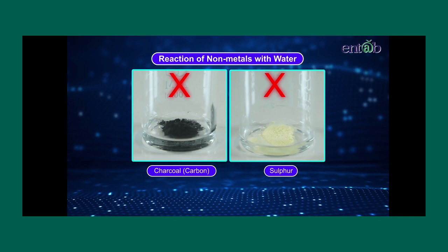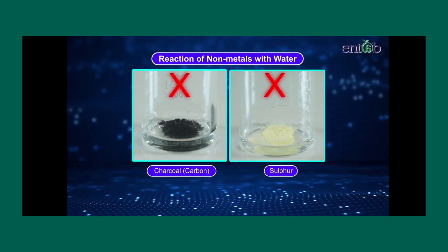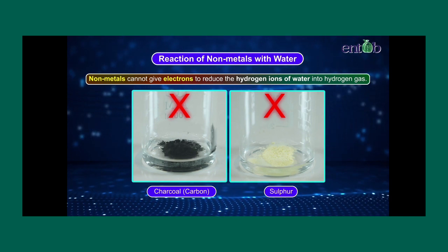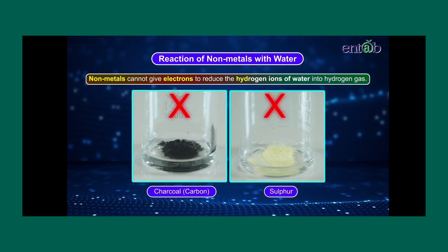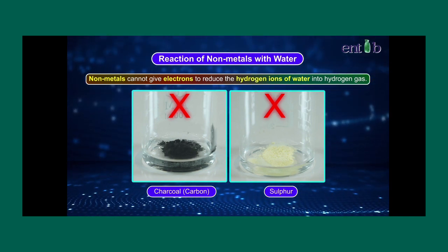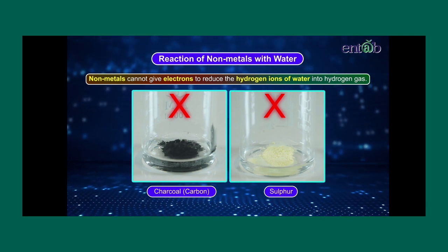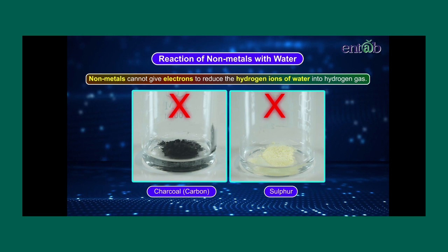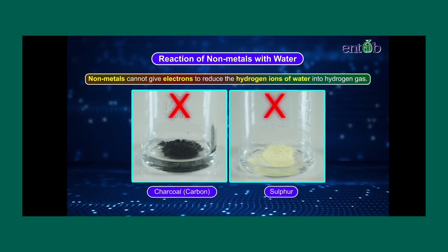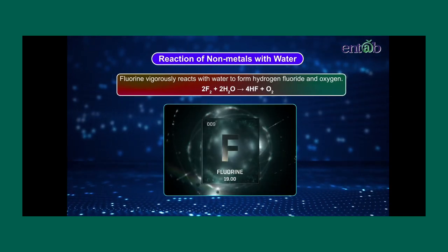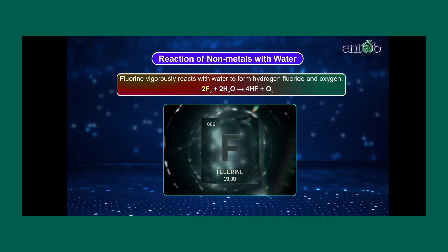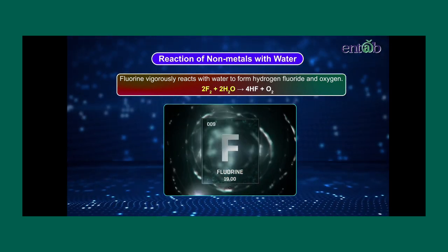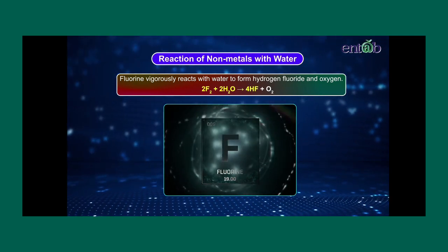Non-metals do not react with water to evolve hydrogen gas, because non-metals cannot give electrons to reduce the hydrogen ions of water into hydrogen gas — except for highly reactive non-metals like fluorine. Fluorine vigorously reacts with water to form hydrogen fluoride and oxygen.